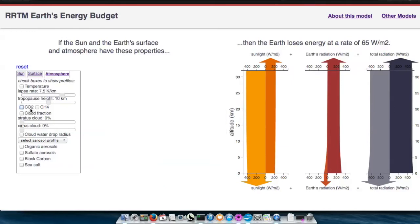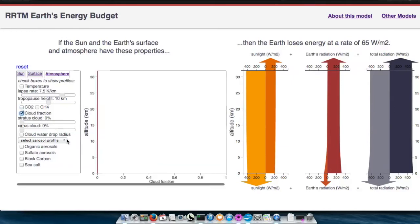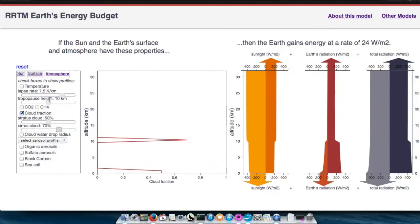To change the cloud fraction, you can turn on the cloud fraction profile so you can see what changes you're making. And then you can use the slider to create stratus clouds, which are low-lying, or cirrus clouds, which are positioned wherever the tropopause height might be.